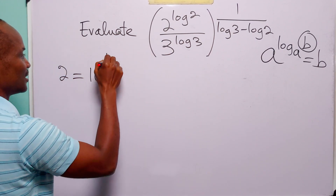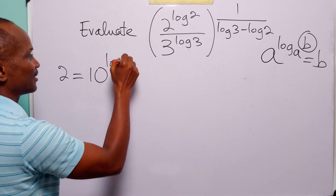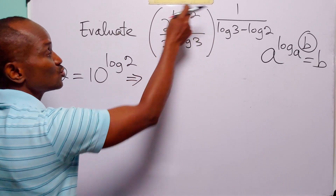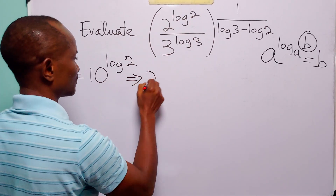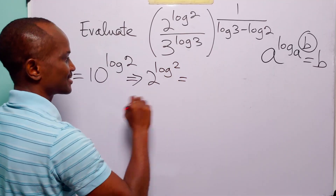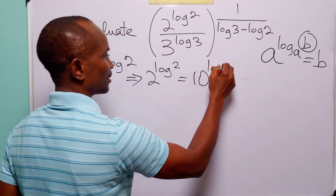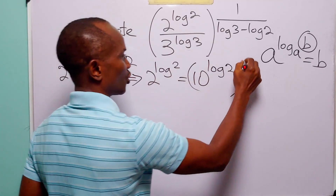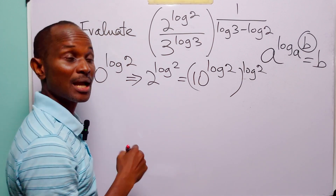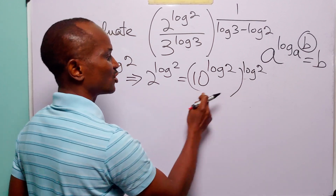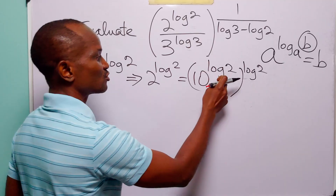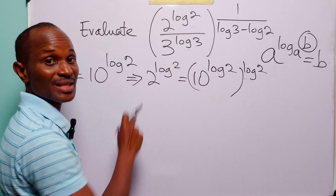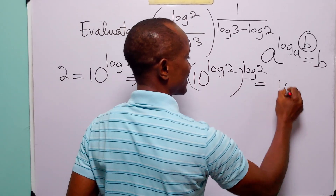With that said, we can write 2 as 10 to the power log base 10 of 2. When we do this, we can write 2 to the power log 2 as 10 to the power log 2, raised to the power log 2. To get rid of this bracket, we multiply these two powers.